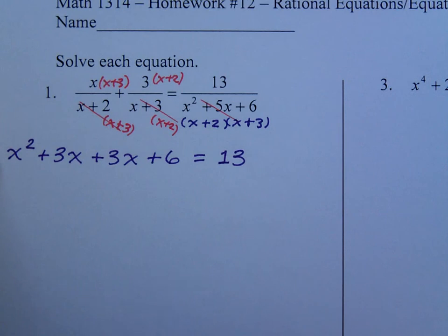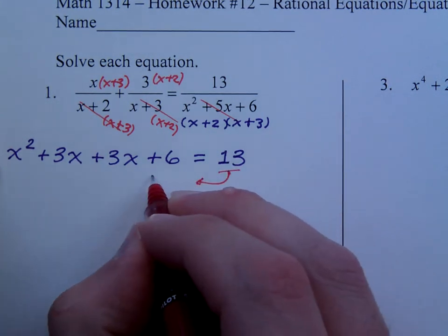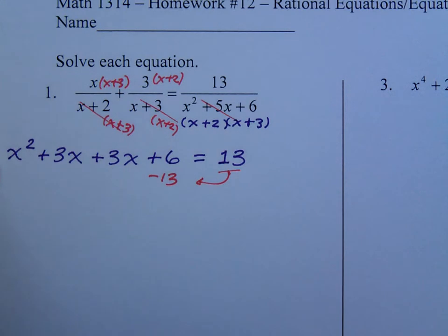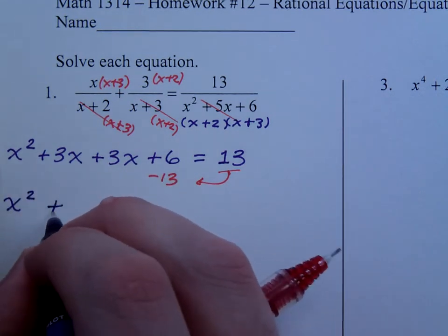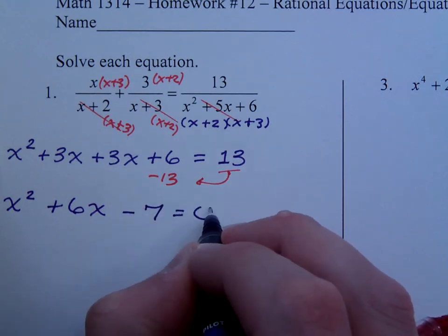This equation is quadratic. So we need to move the 13 over here as a negative 13 and try to solve this guy. That's x squared plus 6x minus 7 is equal to 0.